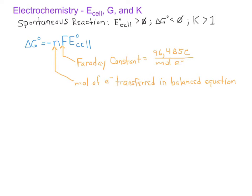When working with this relationship, you need to recall that the standard free energy change is typically given in kilojoules. However, standard cell potentials are usually given in units of volts. When we were learning about cell potentials, we learned that one volt is the same as one joule per coulomb. So wherever you have volt units, you can simply substitute volts for joules per coulomb.